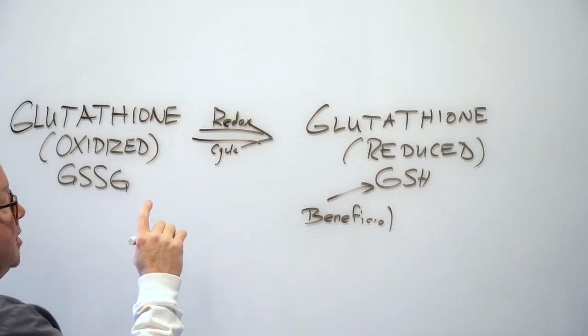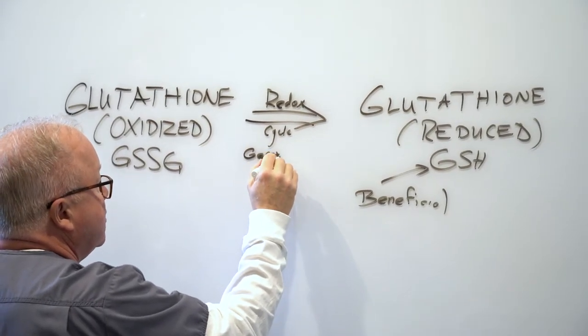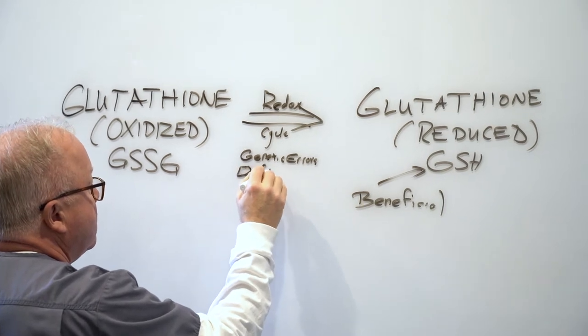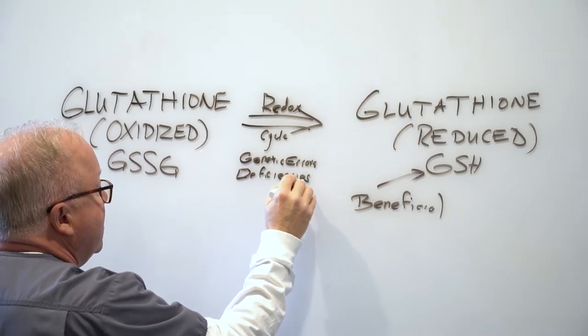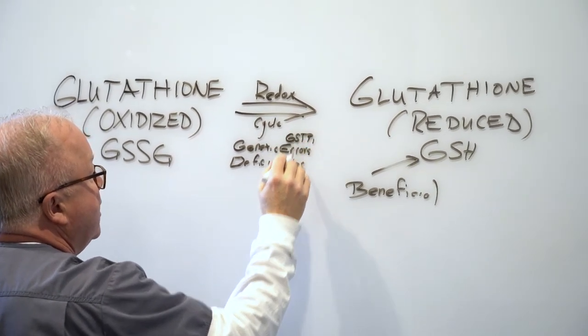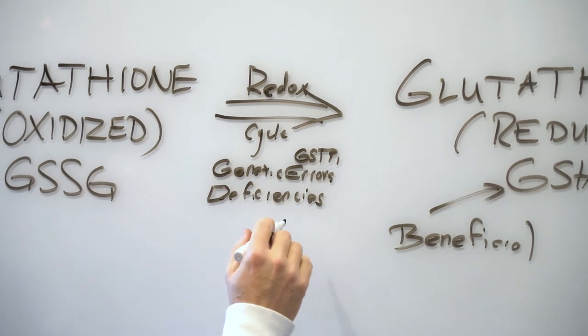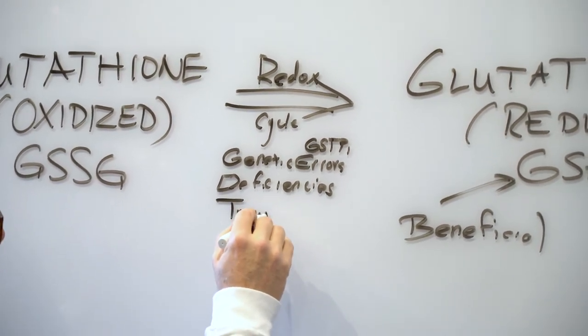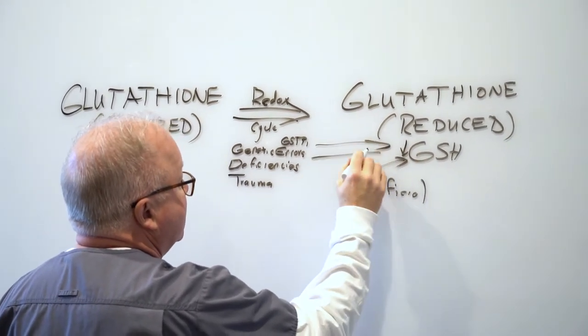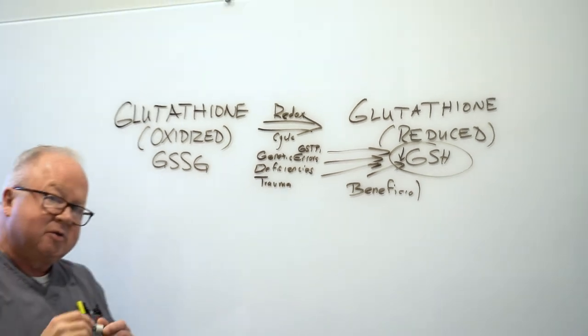The redox cycle can be impaired due to genetic errors, genetic errors due to deficiencies of certain key vitamins. What kind of genetic errors? Like GSTP-1 and others can cause it, due to vitamin deficiencies, due to trauma and other issues. Same with your production of GSH. It can be low due to these same things. This is where the failure occurs.